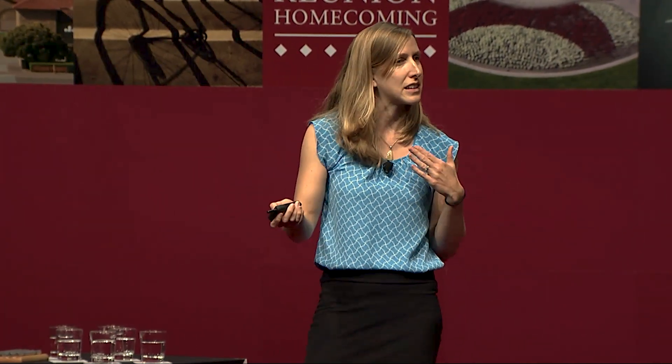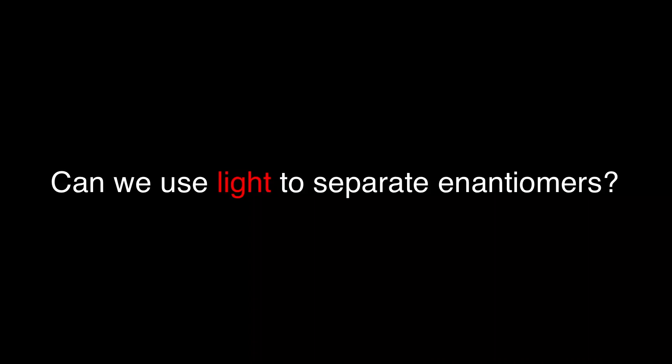In a number of agrochemicals like herbicides and pesticides, the wrong-handed molecule can leave residues in soil, giving rise to colony collapse in bees, and in some cases organ failure in birds, fish, and larger mammals. So what my lab is trying to do is figure out if we can use light to separate enantiomers.